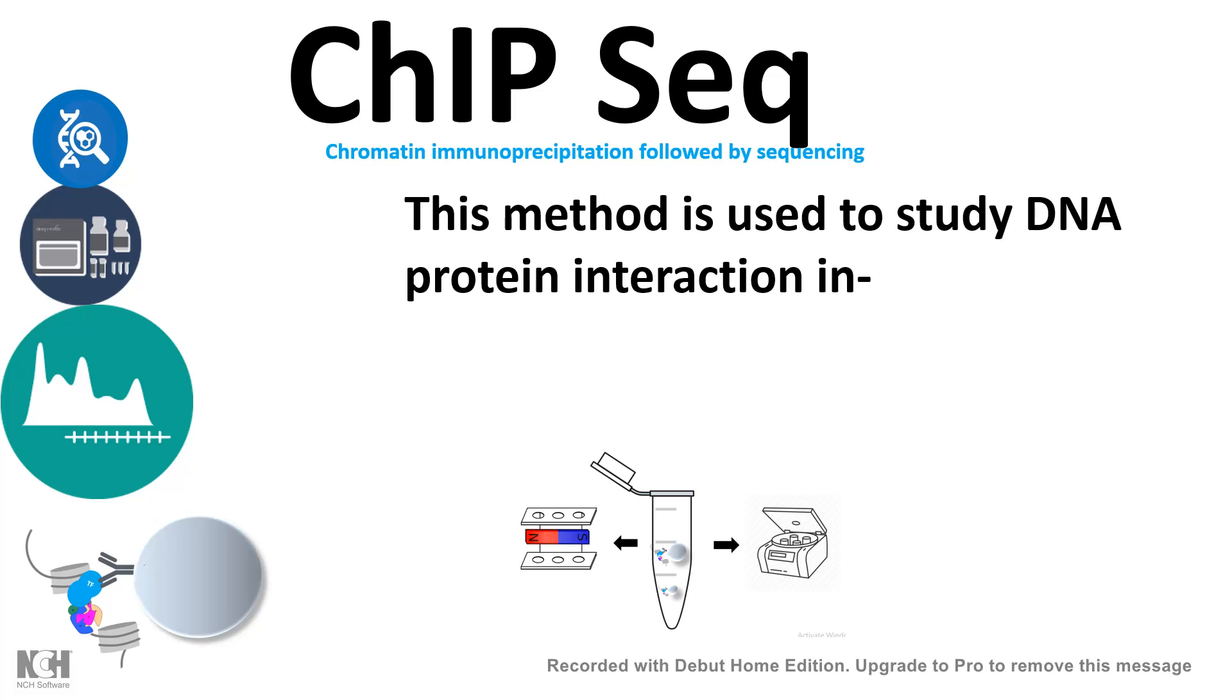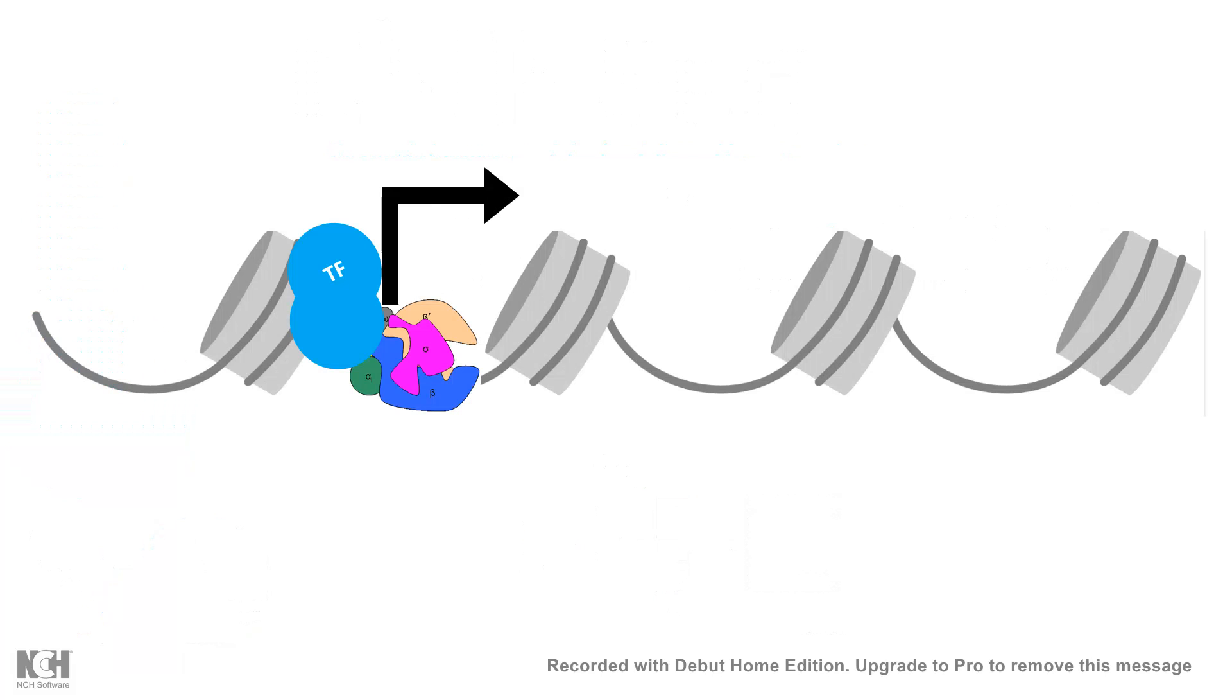In order to do that, this method uses DNA-protein interaction study and it can be used in vitro or in vivo. It uses antibody-coated beads. Let's say we know that for this particular protein we have an antibody against it, so we would use the antibody to pull down the protein and we would see what DNA region is pulled down along with that particular protein.